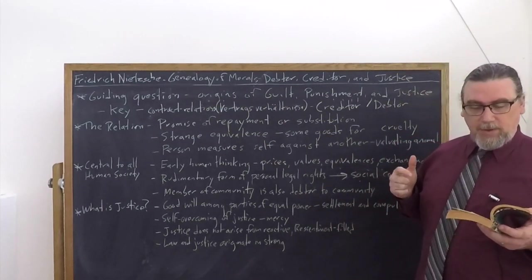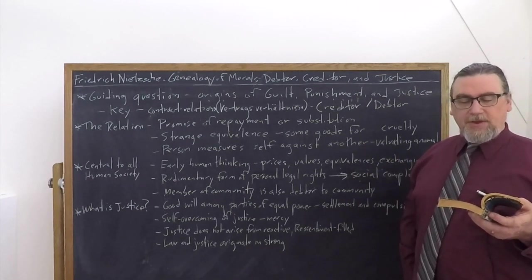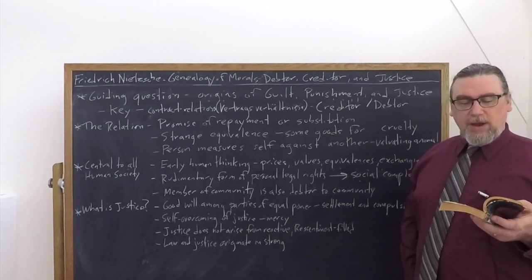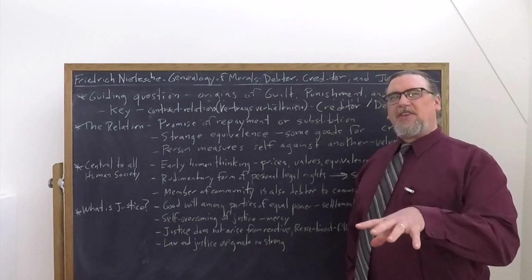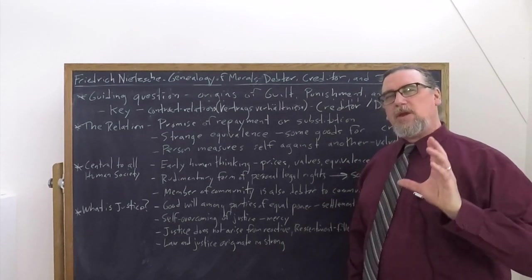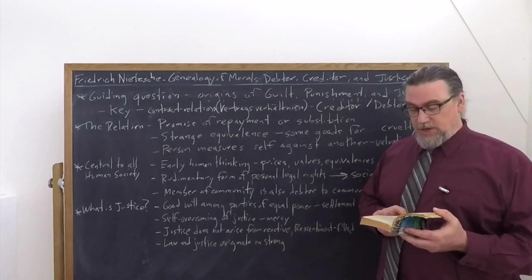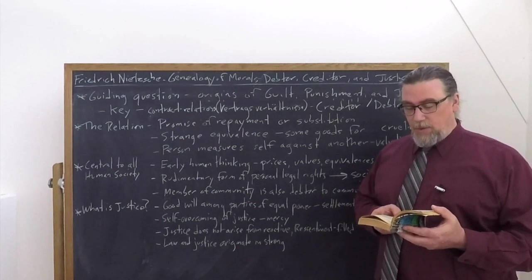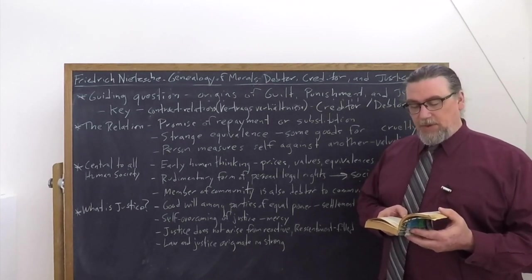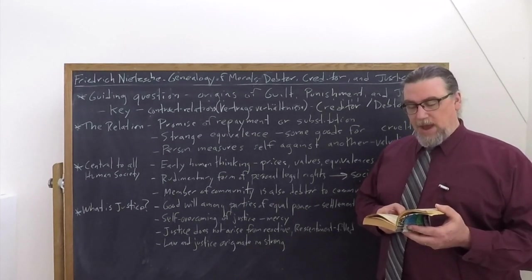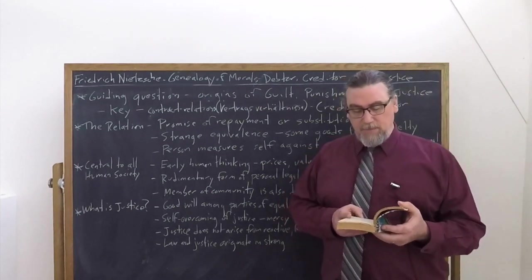So being exiled, being set outside of the community means being vulnerable in many ways. Being a member of the community means being protected, being assured. And so if you break the mores, the rules, the laws of the community that you're already a debtor to, you're kind of a double debtor. So he says, what will happen if this pledge is broken? The community, the disappointed creditor, will get what repayment it can. The direct harm caused by the culprit is a minor matter. So if you steal from the communal till, that's a bad thing. But the community also has to have recompense for the mere fact that you have violated the agreement, violated the norm. And it can impose an incredible heavy sanction at first. The lawbreaker, as he says, is a debtor who has not only failed to make good the advantages and advance payments bestowed on him, but actually attacked his creditor.